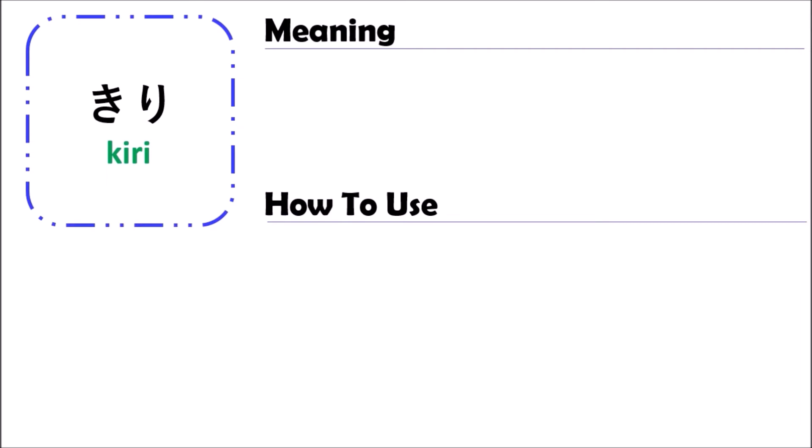The grammar of kiri means 'only', or 'just', or 'since', or 'after that'. When you use kiri, you can say something like 'just' or 'only' or 'since'.